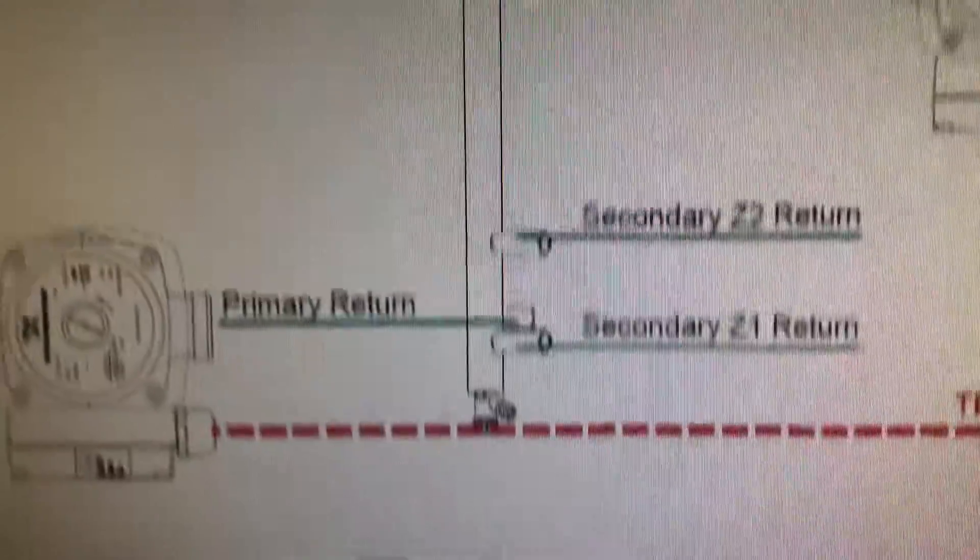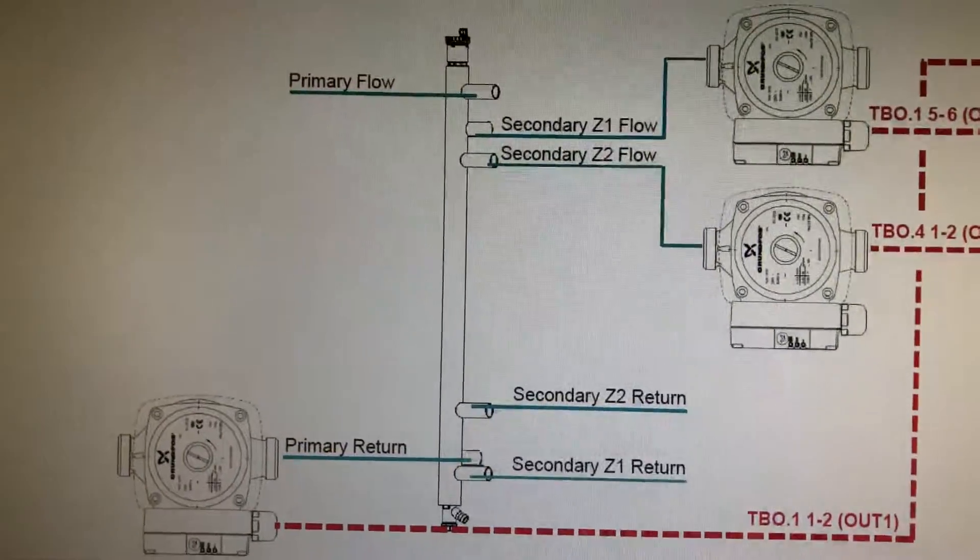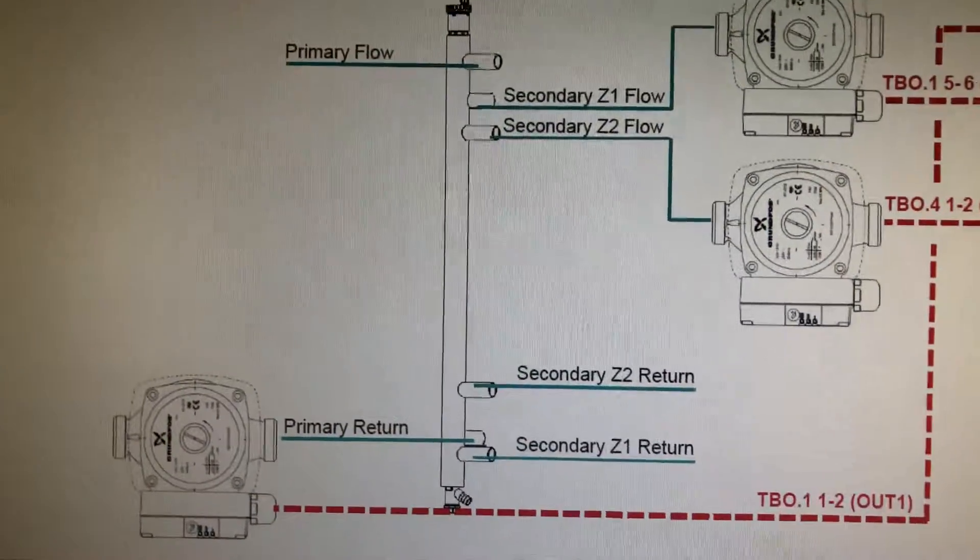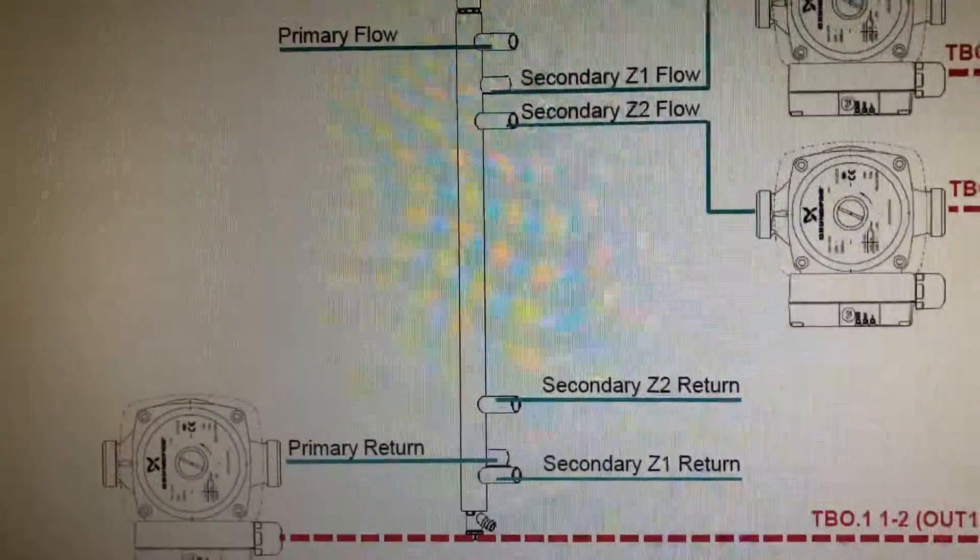Zone 1, Zone 2 flow, Zone 1, Zone 2 return. Dead easy. Your main house radiators go in Zone 1 and 2 return. Underfloor heating or a second zone goes in Zone 2 flow and Zone 2 return.